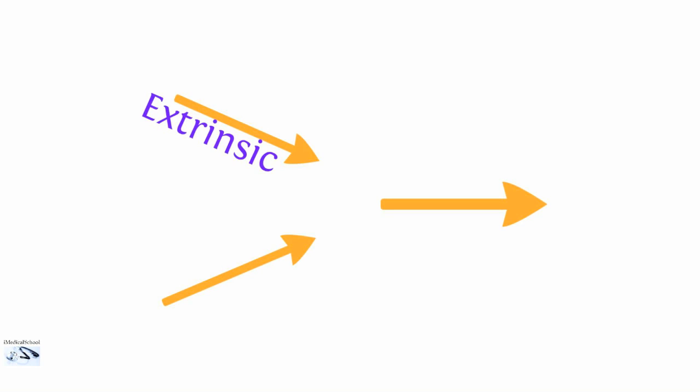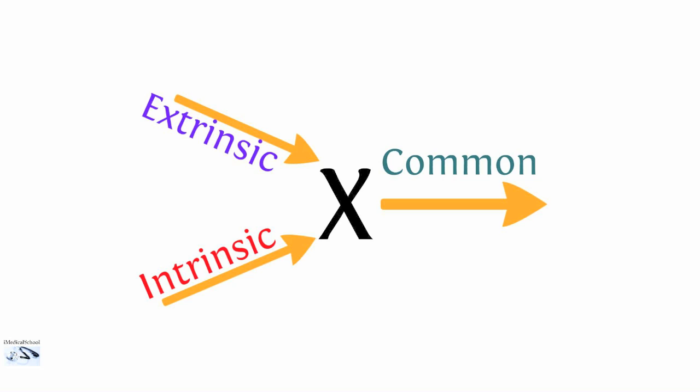Let's first talk about the coagulation cascade — there's a previous video you can refer to for details. Briefly, our coagulation cascade consists of an extrinsic, intrinsic, and common pathway. The extrinsic portion consists of factor VII and tissue factor, sparked by tissue damage leading to activation of tissue factor and factor VII. Our intrinsic pathway consists of factors XII, XI, IX, VIII, and high molecular weight kininogen.